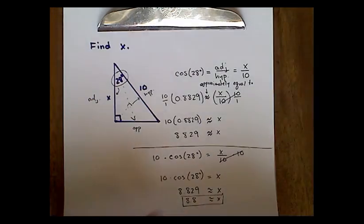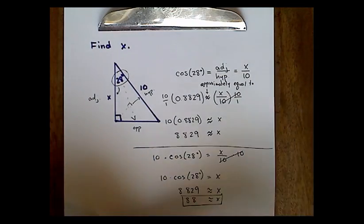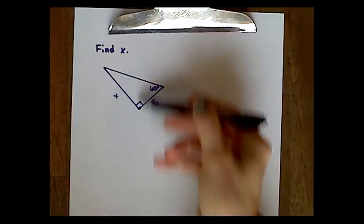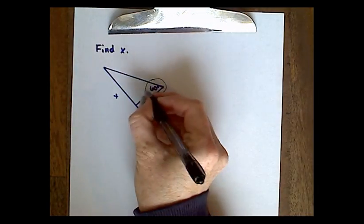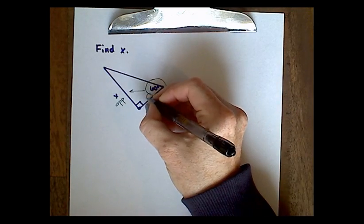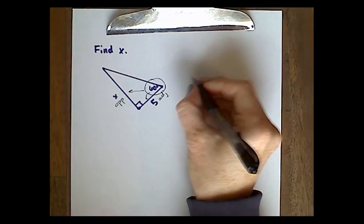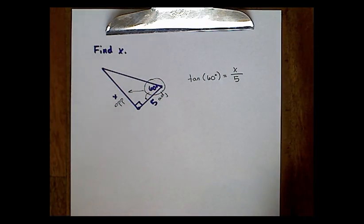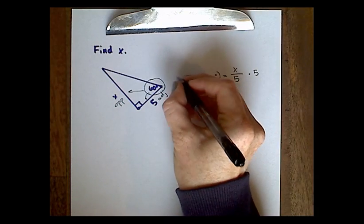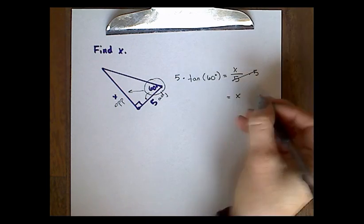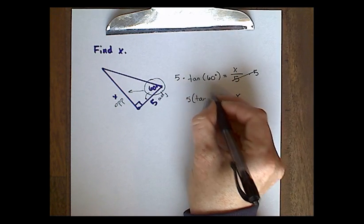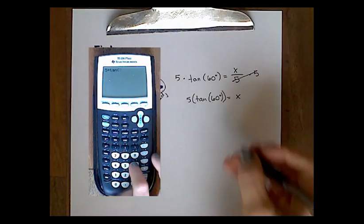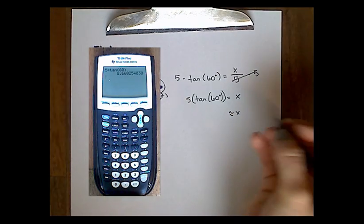Let's try a second problem, and this time we'll complete it quickly using the second method — carrying the trig expression as long as possible. We're finding x, and we have the angle 60 degrees. We have the opposite leg and the adjacent leg, which is the TOA in SOHCAHTOA, so we're going to use tangent — opposite over adjacent. We set up the equation, solve for x by multiplying both sides by 5, then punch in 5 times the tangent of 60 degrees. Rounding to one decimal place, x is approximately 8.7.